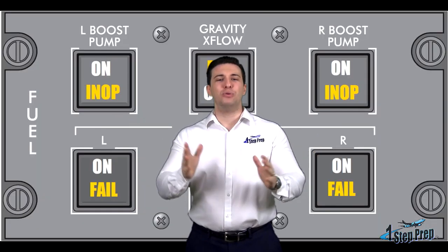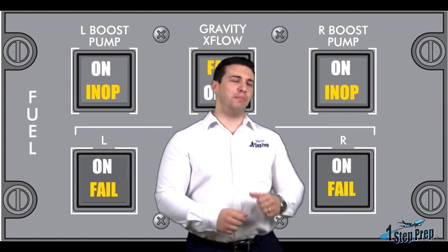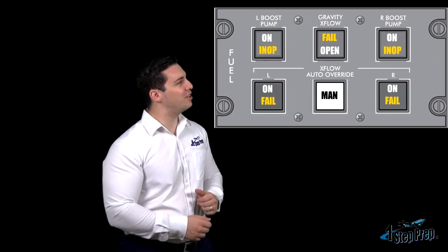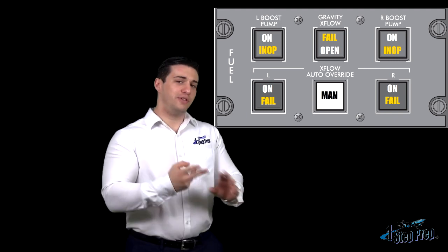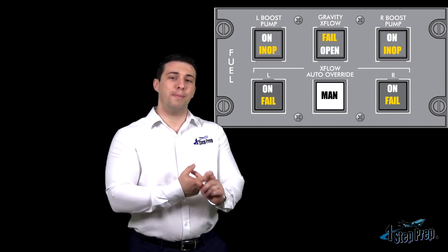Moving on to the fuel panel, we have these in-op lights - amber lights that are associated with our left and right boost pumps. With these in-op lights, essentially what these amber indications are telling you is one of two things. Either one, the pump output pressure is low, which would tell us it's basically inoperative, hence the light in-op.